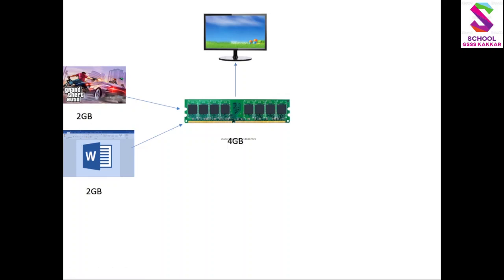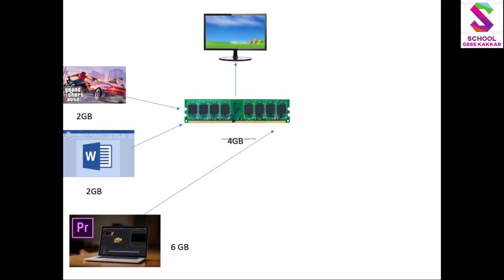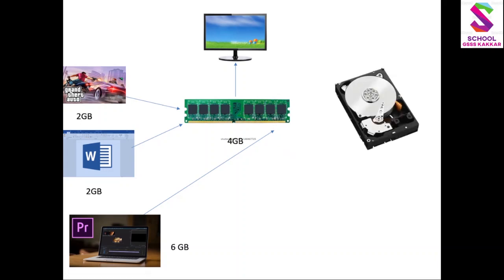अब मानो कि हमने एक तीसरा software open करना है - एक बड़ा software है. 6GB का हमारे पास एक video editing software है, हमने उसको भी open करने की command दे दी. RAM तो already 4GB है और 4GB के software already open हो रखे हैं, तो यह 6GB का software कैसे आएगा? तो हम ऐसी condition में hard disk के ऊपर swap space create कर सकते हैं - 6GB का या 10GB का.